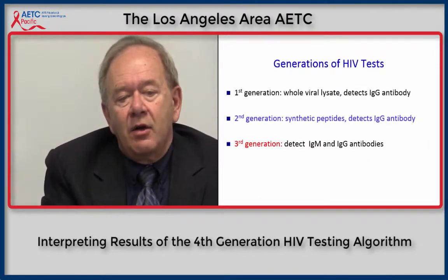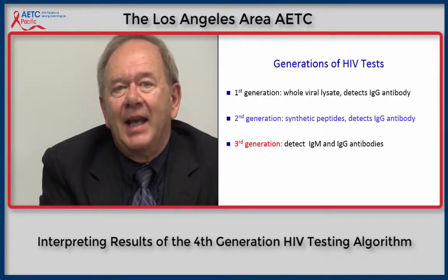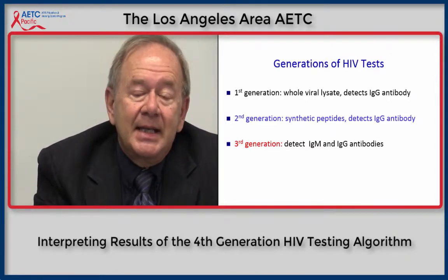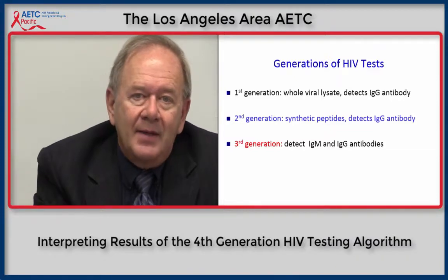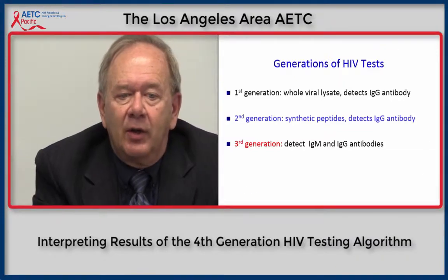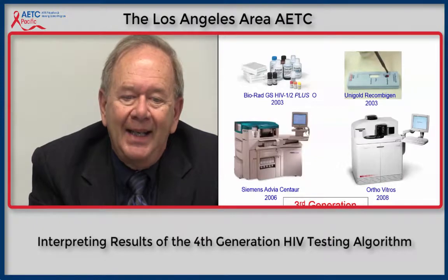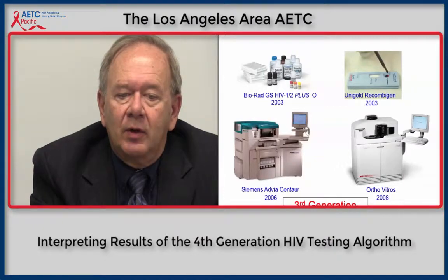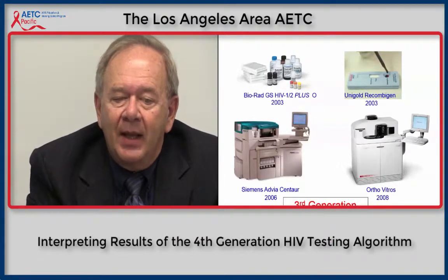Third-generation tests detect both IgM and IgG antibodies. This represented a significant improvement because of the ability to detect infection earlier. There are an EIA, a rapid test — the Unigold Recombogen — based on the third-generation principle.